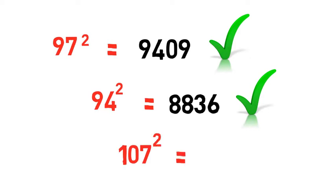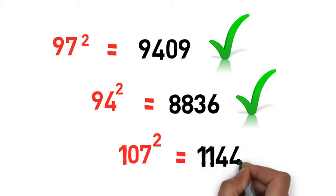107 square equals 11449. I said 11449, write it down. Do you think I am a fool? 11449.